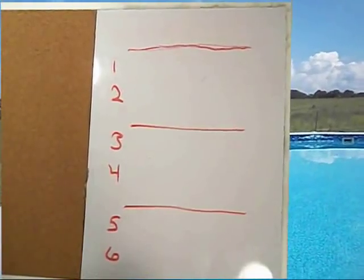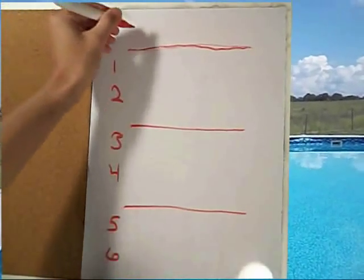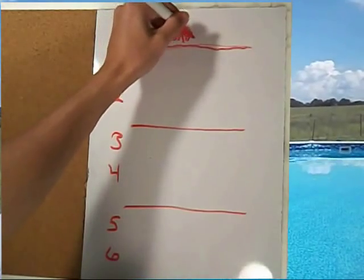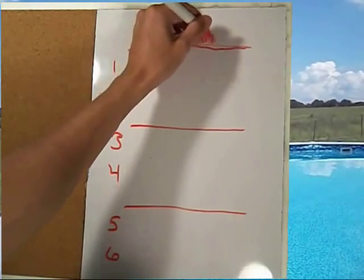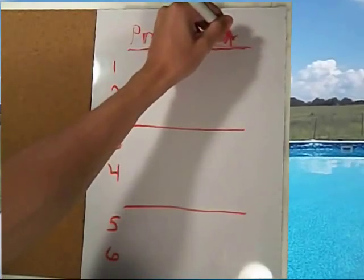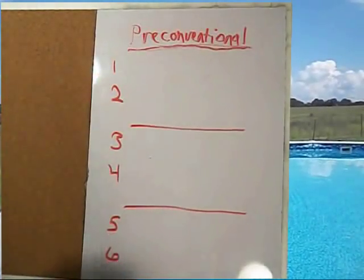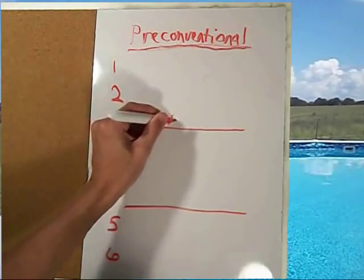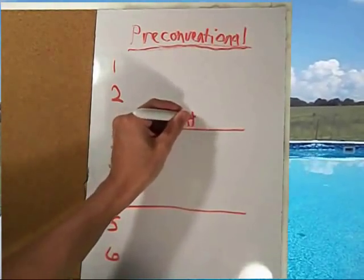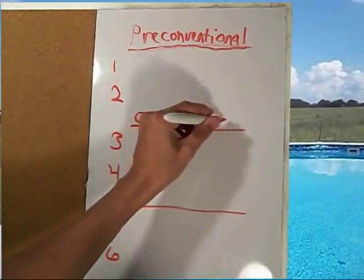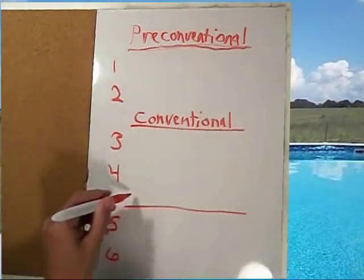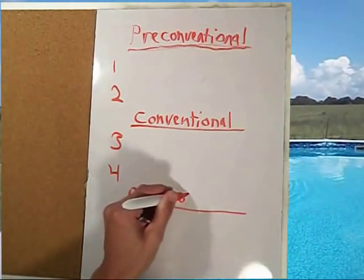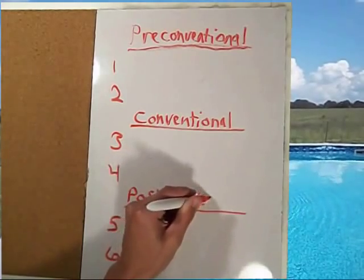This is my theory, where I have three levels and six stages. The first level is the pre-conventional level, where judgment is based solely on a person's own needs and perceptions. The second level is the conventional level, where the expectations of society and laws are taken into account. The third level is the post-conventional level, where judgments are based on abstract or personal principles of justice.